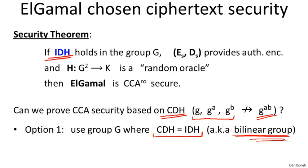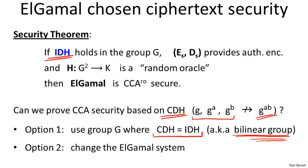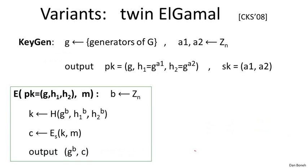But maybe you don't want to use elliptic curve groups — maybe you want to use Z_P* for some reason. So it's a natural question to ask: can we change the Elgamal system such that chosen ciphertext security can be proven directly based on CDH for any group where CDH is hard, without assuming any additional structure about the group? It turns out the answer is yes, and there's an elegant construction called twin Elgamal.